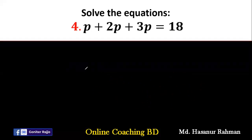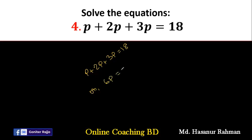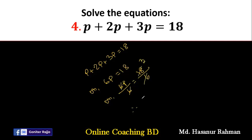Now number 4. Number 4 says p plus 2p plus 3p equal to 18. So p plus 2p plus 3p is 6p equal to 18. Now we have to divide by 6: 6p divided by 6 equal to 18 divided by 6 — 18 divided by 6 is 3. So the final answer will be p equal to 3, and this is the required solution.